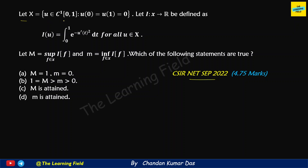The question says: let X equal to {u belonging to C¹[0,1]} where u is continuous and first-order differentiable, with u(0) = 0 and u(1) = 0. Let I from X to R be defined as I(u) equal to integration 0 to 1 of e to the power minus u-dash(t) squared dt — note this is u-dash squared in the exponent, not t squared.